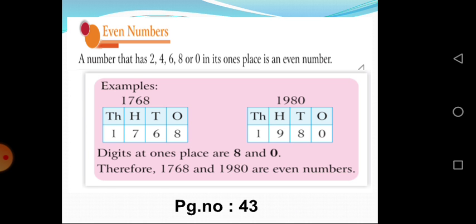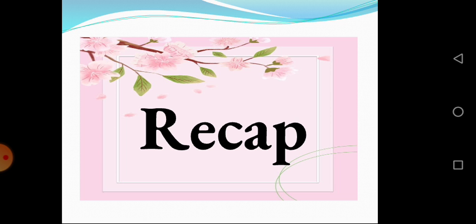So, 8 and 0 are Even Numbers. Okay children, did you all understand Even Numbers? Very good children. Today we discussed about Even Numbers. Even Numbers means 0, 2, 4, 6, 8. These numbers are called Even Numbers.